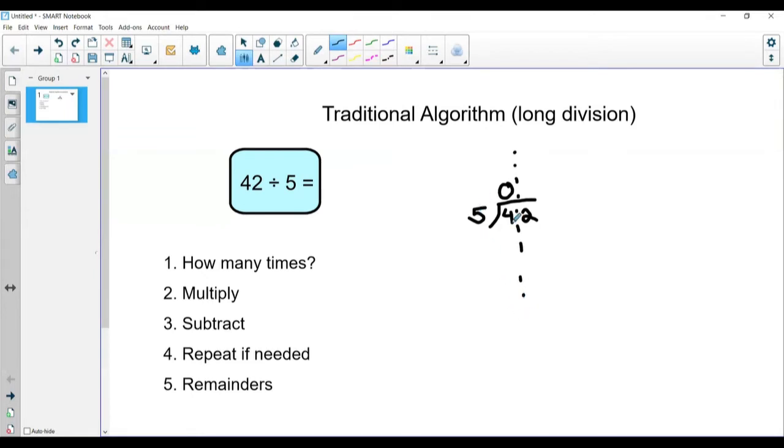Since 5 can't go into the first digit of 4, we're going to think how many times can 5 go into 42 instead. So how many times can 5 go into 42? You can think 5 times what number is close to 42, or you can skip count. If I was thinking 5 times what number is close to 42, I would think 5 times 8 equals 40, which is very close to 42. But if you can't do that in your head, you can skip count.